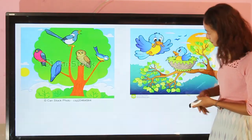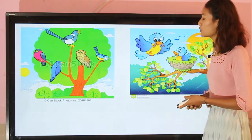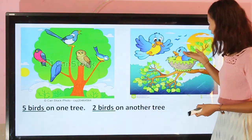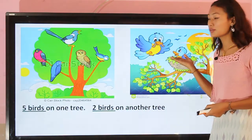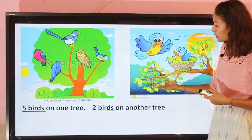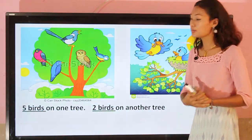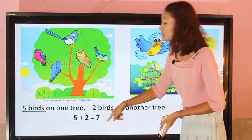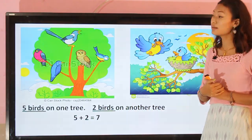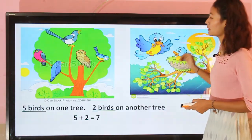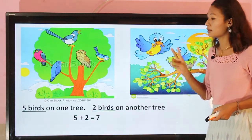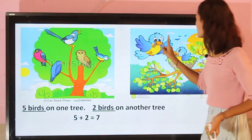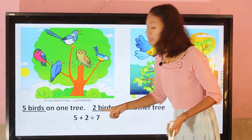Let's see here. Poonam saw five birds on one tree and two birds on another tree. Five plus two is seven. Let's count all the birds: one, two, three, four, five, six, seven. So five plus two is seven.